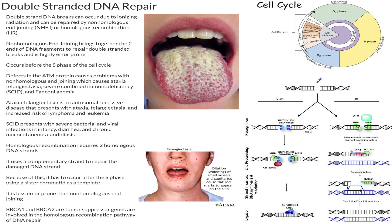Now let's talk about SCID, which is severe combined immunodeficiency. SCID will usually present in children with severe bacterial as well as viral infections, diarrhea, as well as chronic mucocutaneous candidiasis, which is shown right here on the tongue.